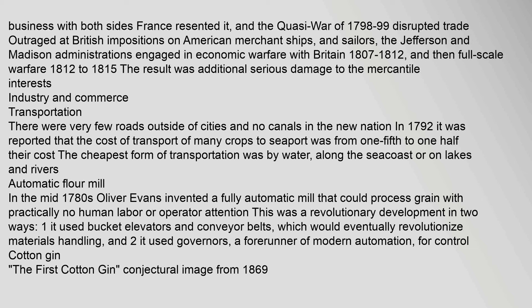There were very few roads outside of cities and no canals in the new nation. In 1792 it was reported that the cost of transport of many crops to seaport was from one-fifth to one-half their value. The cheapest form of transportation was by water, along the seacoast or on lakes and rivers. In the mid-1780s Oliver Evans invented a fully automatic mill that could process grain with practically no human labor — a revolutionary development that used bucket elevators, conveyor belts, and governors, a forerunner of modern automation.